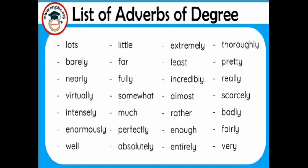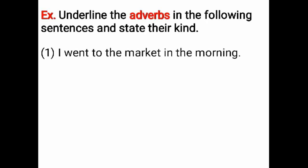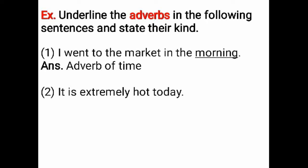Let's begin an exercise now. Underline the adverbs in the following sentences and state their kind. First: I went to the market in the morning. The underlined word is 'morning'. Morning is the adverb of time. Next: It is extremely hot today. The underlined word is 'extremely'. Extremely is the adverb of degree.